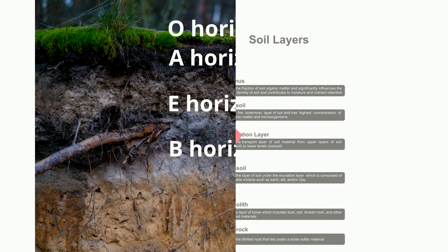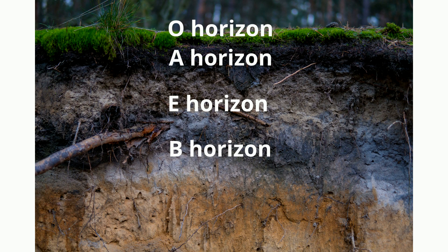Horizon B is called the subsoil. It is lighter in color. Many times it is reddish or brown in color because it has less humus. It is a zone of accumulation where materials like clay collect from the movement of water downward.